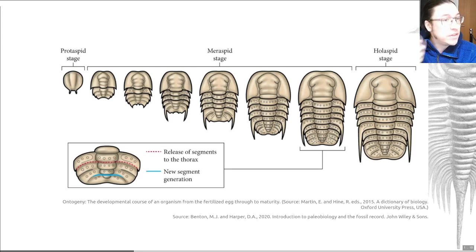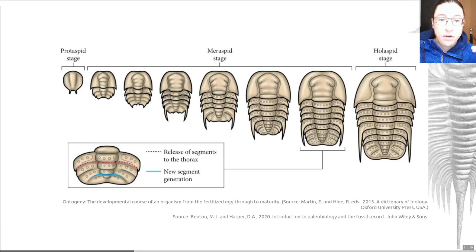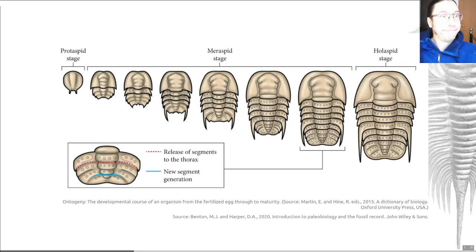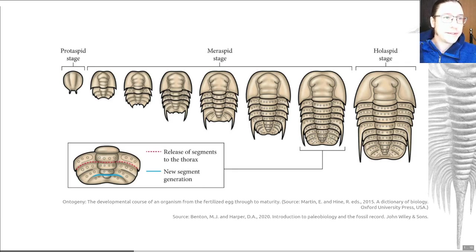The final stage, called the holaspid stage, has a full complement of thoracic segments for the species. At that point, animals still grew via molting until they reached maturity — each time they molted, their body would get bigger, but they wouldn't add more segments. That brings us to the end of this video. Thank you for sticking with me. In the next video, we're going to be looking at the morphology of the trilobite — so onwards and upwards.